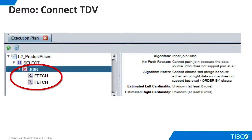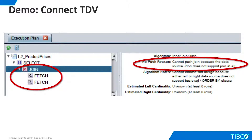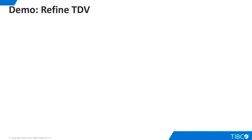When we examine the join node, we see that TDV believes FoxPro is incapable of performing a join. We still have some work to do, and the answer lies in our values.xml file. Our parent adapter, generic JDBC, assumes that data sources have minimal capabilities. We'll need to edit our custom values.xml file in order to change this behavior.